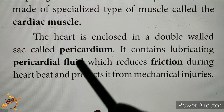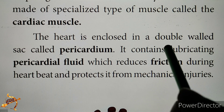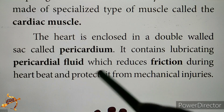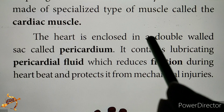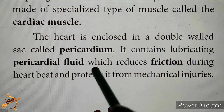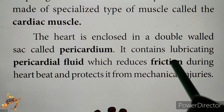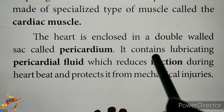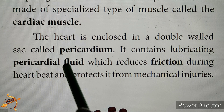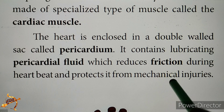The heart is enclosed in a double-walled sac called the pericardium. It is a double-walled sac — that is, there are two layers. It contains lubricating pericardial fluid, which reduces friction during heartbeat and protects the heart from mechanical injuries.